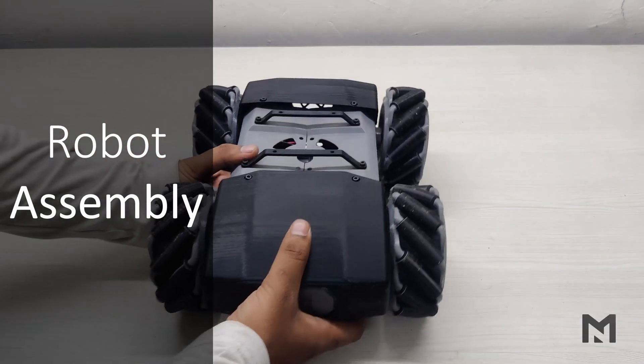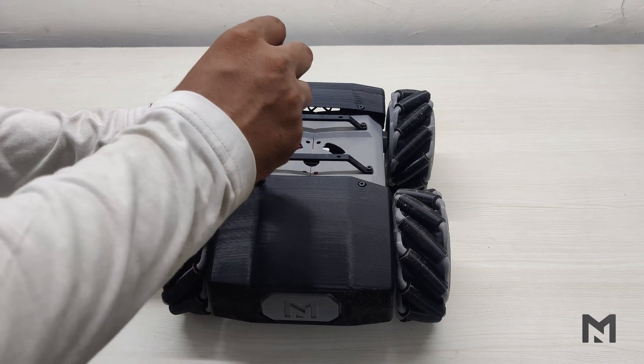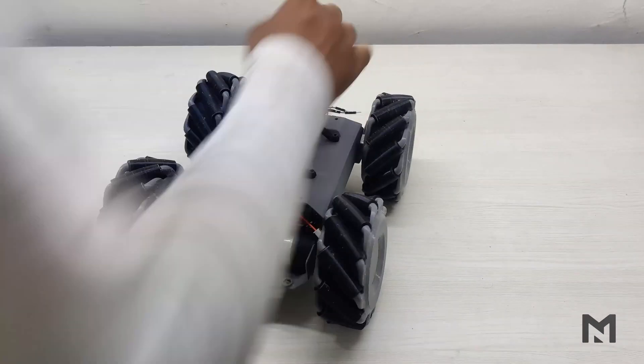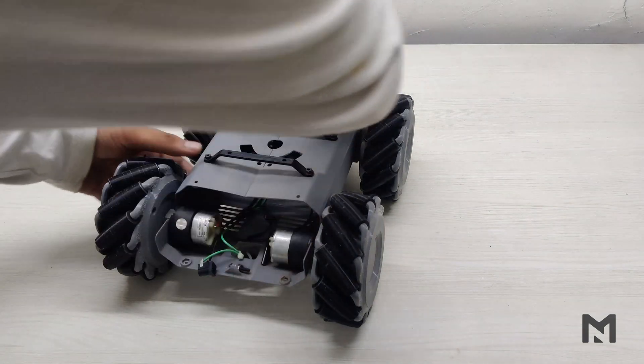Now let's get back to the assembly work. Here I am using the body of the mecanum wheel robot which I made in the previous video. If you haven't checked it out, click on the i button and have a look. I have removed the front and back body panels and the battery so that we can start the assembly work.